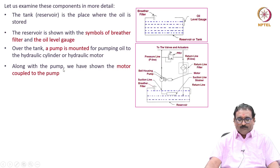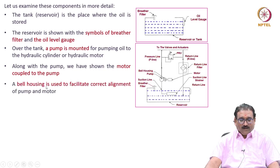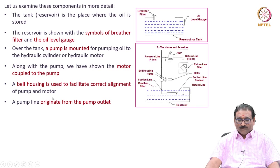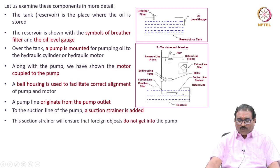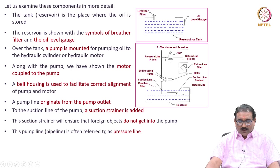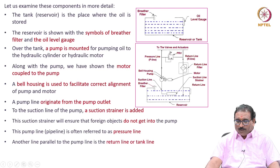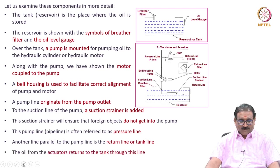Along with the pump, we have shown the motor coupled to the pump. A bell housing is used to facilitate the correct alignment of pump and motor. A pump line originates from the pump outlet. To the suction line of the pump, a suction strainer is added. This suction strainer will ensure that foreign objects do not get into the pump. This pump line, or P line, is often referred to as a pressure line. Another line parallel to the P line is the R line — return line or tank line. The oil from the actuator returns to the tank through this line.